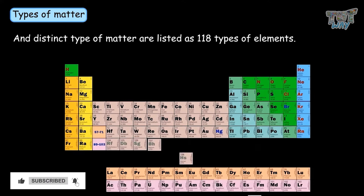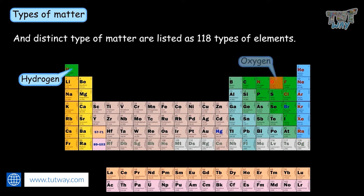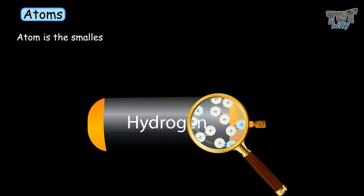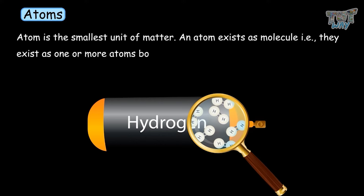Each element has a symbol. For example, hydrogen, oxygen, nickel, cadmium, silicon, helium — all these are a distinct type of matter, as these elements have the same types of atoms. So the atom is the smallest unit of matter. Atoms exist as molecules, meaning they exist as one or more atoms bonded together.